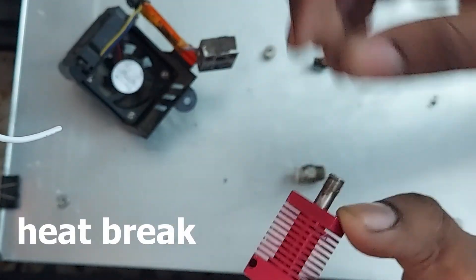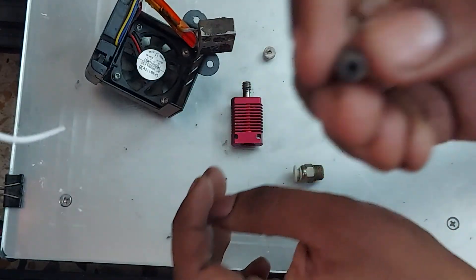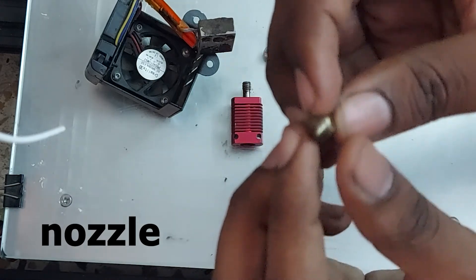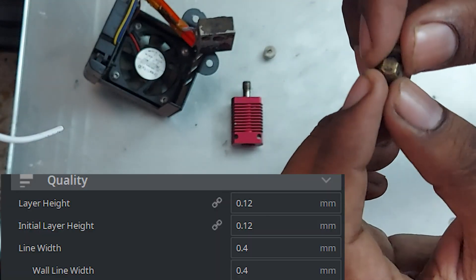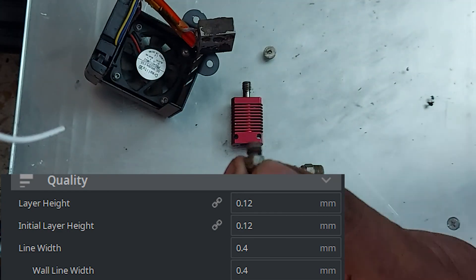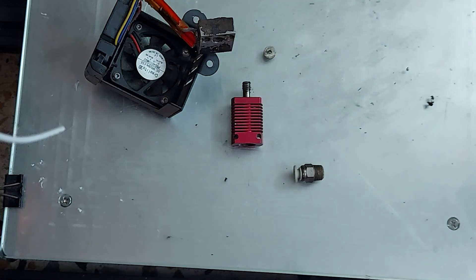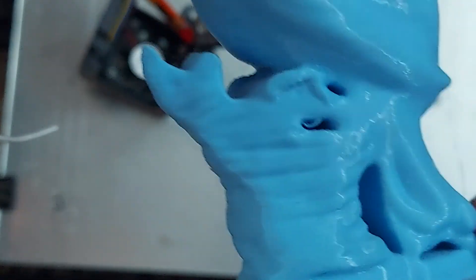And this is the nozzle. The print quality is defined by the layer settings. Layer is nothing but the thickness of the layer of the print. This is what defines the difference between a fine print and a rough print.